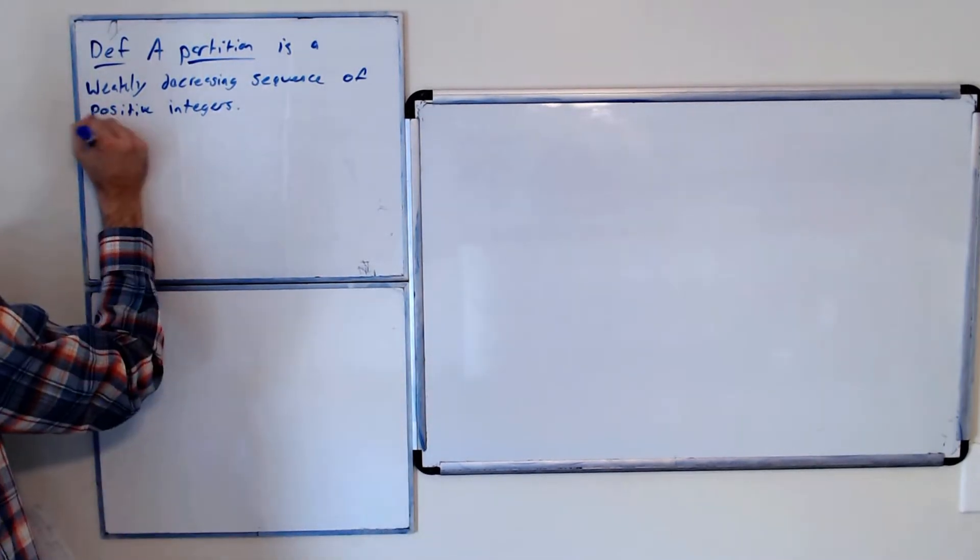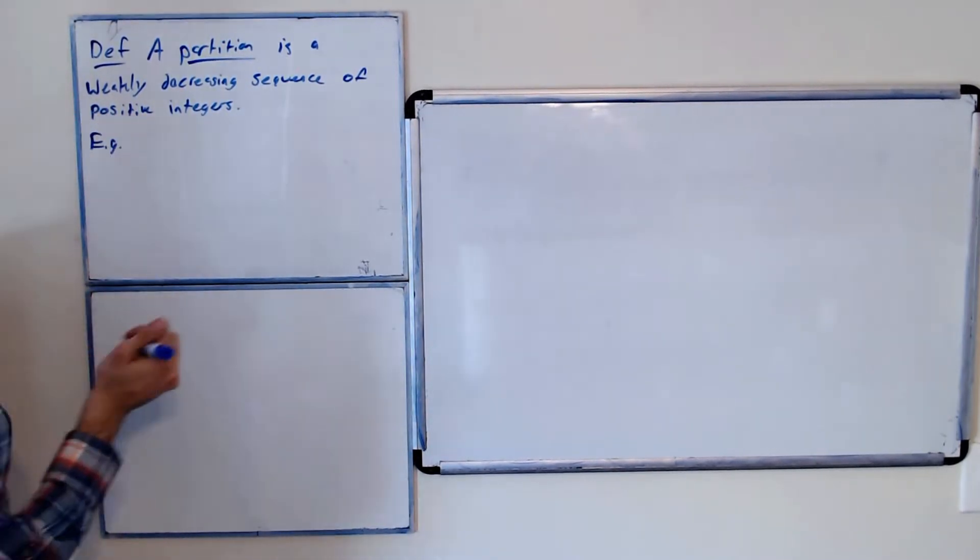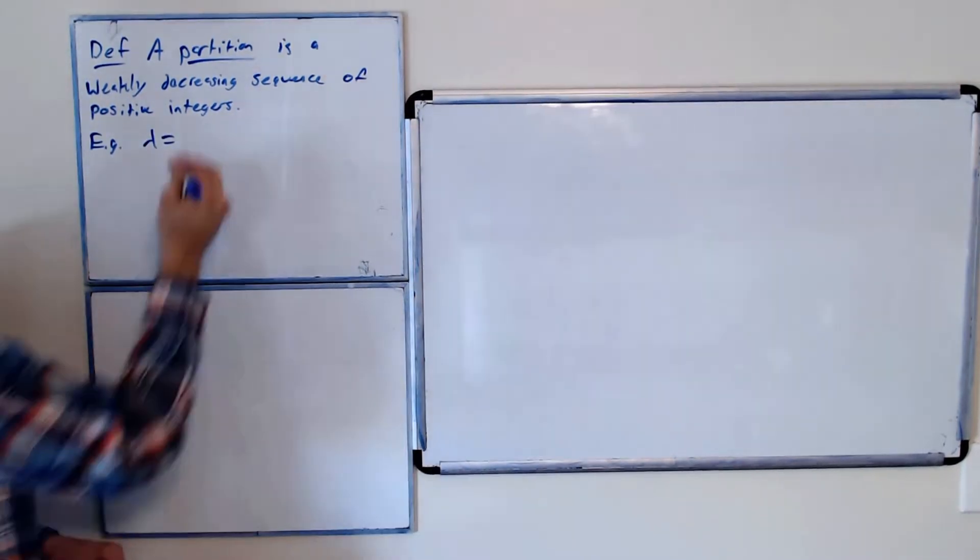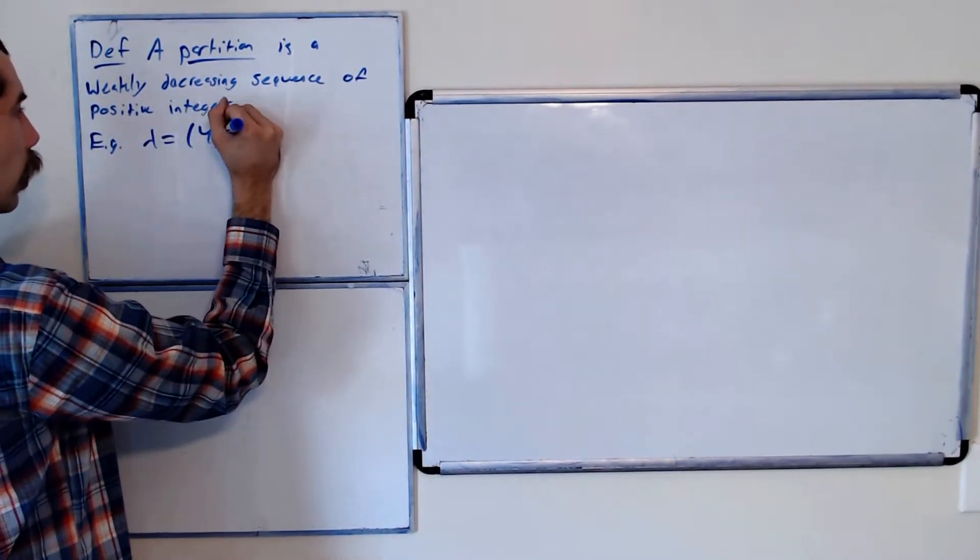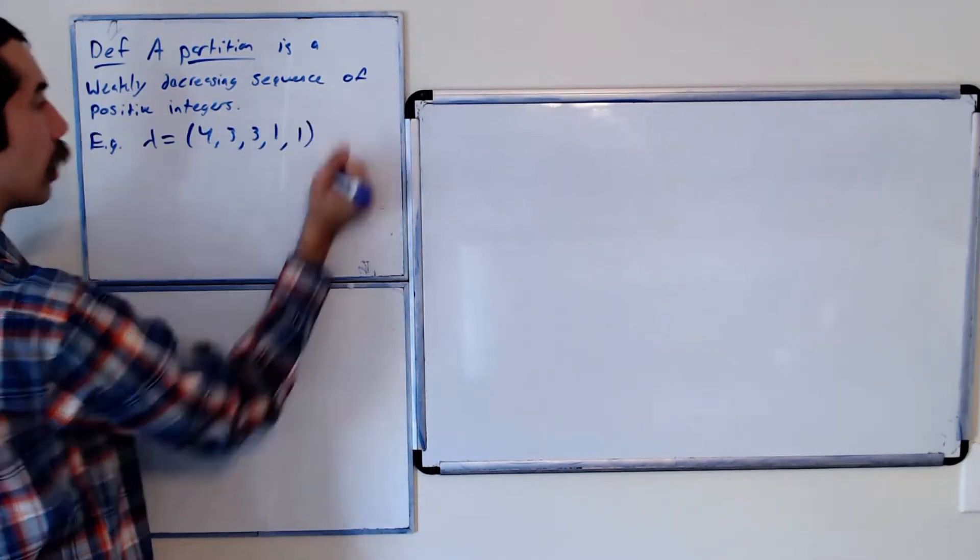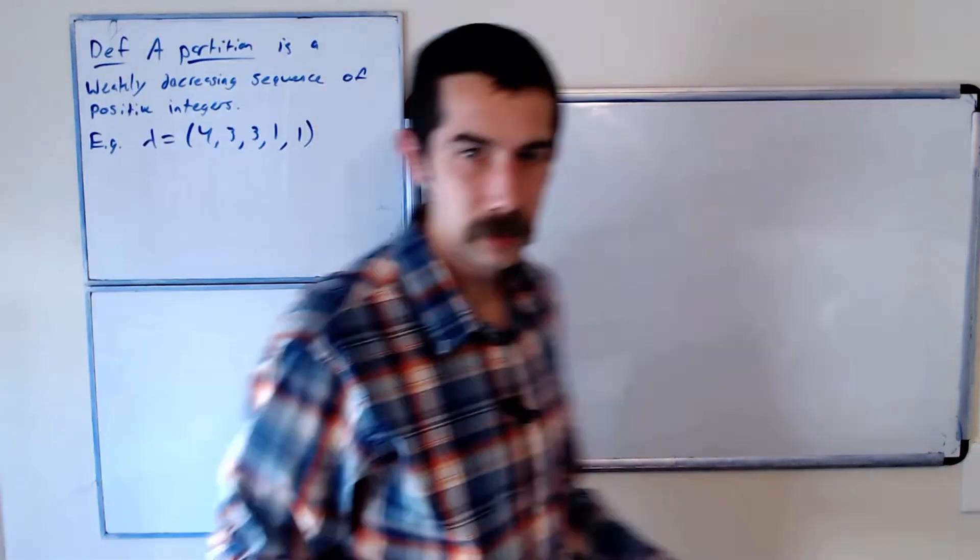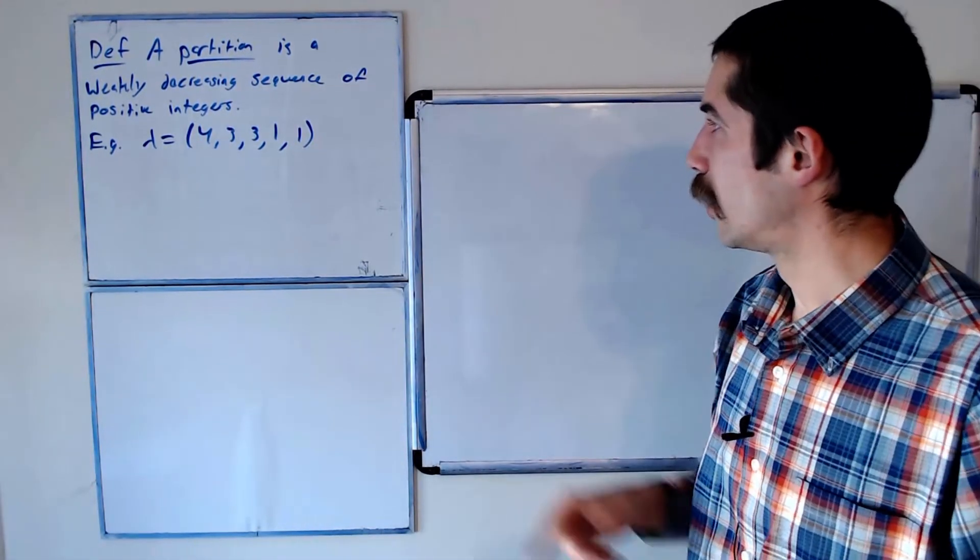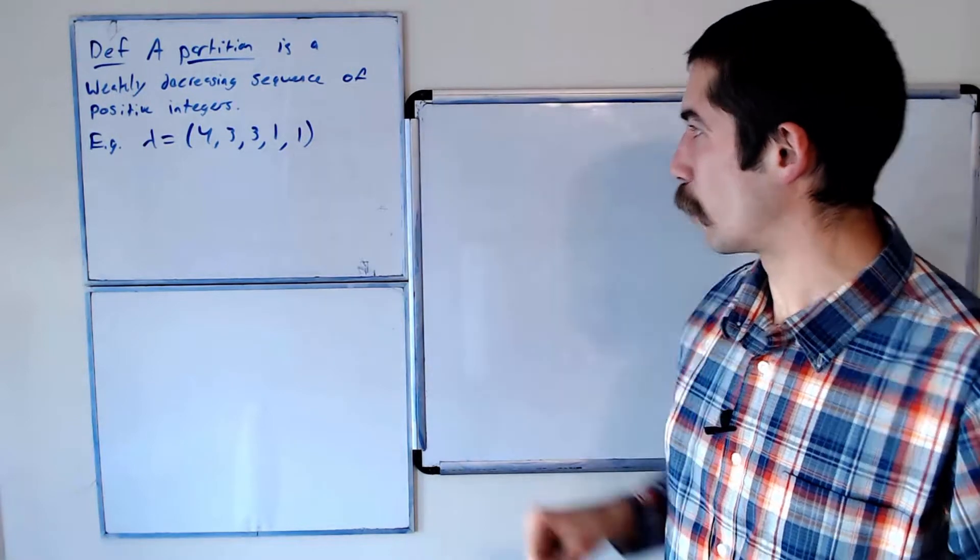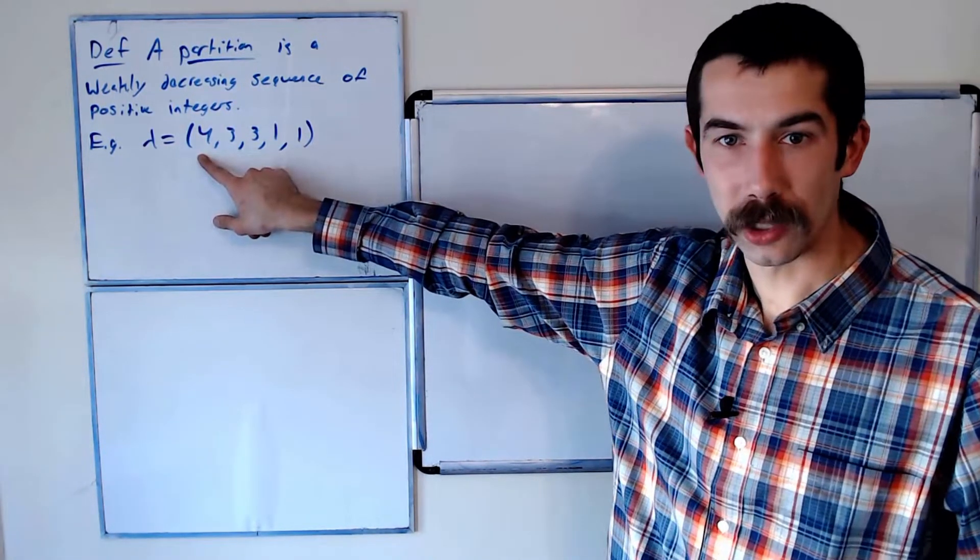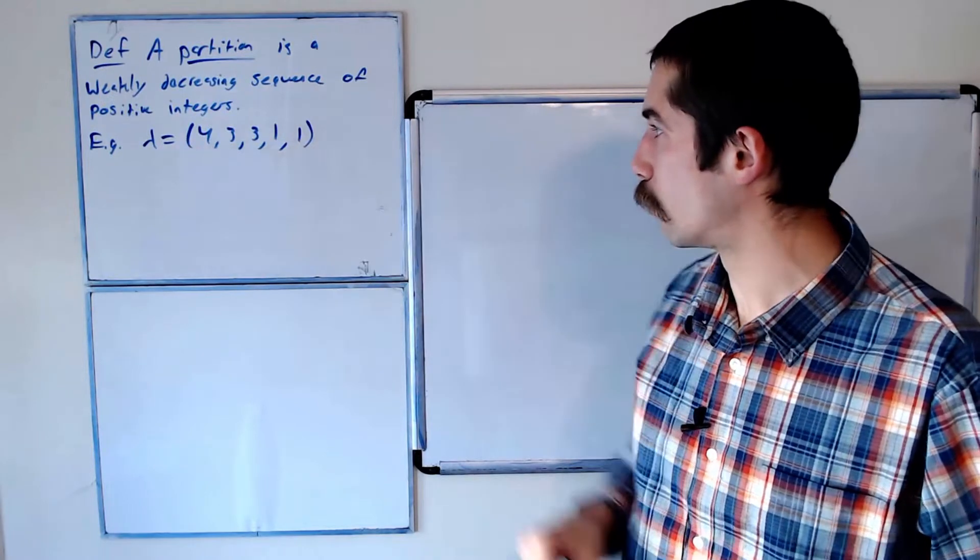For example, we usually use lambda to denote the partition. So lambda equals 4, 3, 3, 1, 1 is a partition. The number of parts of this partition would be 5, and its largest part always appears in location 1. So its largest part here is 4.